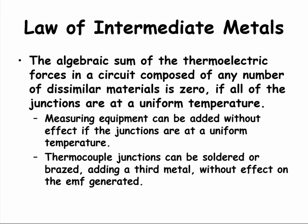The second law, the law of intermediate metals, states that if we have intermediate metals and multiple dissimilar metal junctions, the EMFs may sum to zero if all the intermediate junctions are at the same temperature. So we can add equipment to the circuit, and as long as all of the equipment junctions are at the same temperature, the total EMF is zero and does not affect the measured EMF. A second consequence is that we can use solder to make thermocouple junctions, and the third metal does not affect the EMF generated. This makes it easy to make junctions in the field using normal soldering techniques.